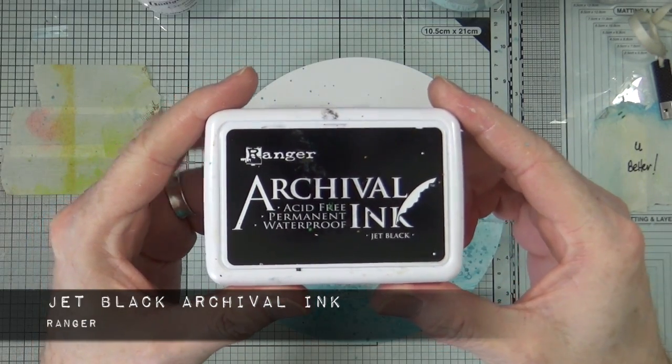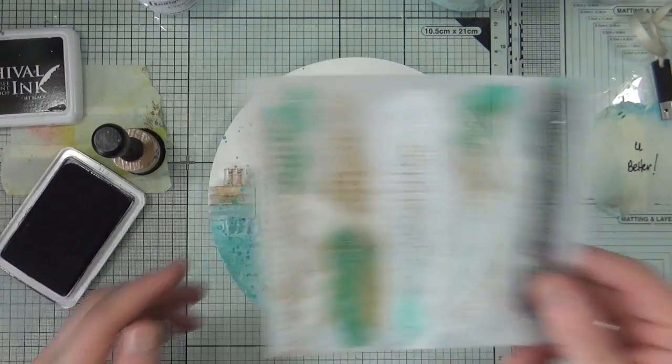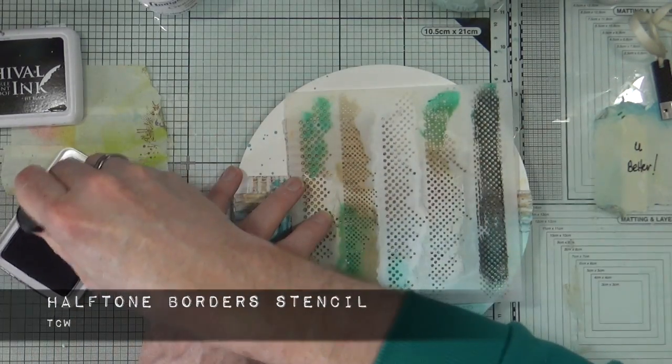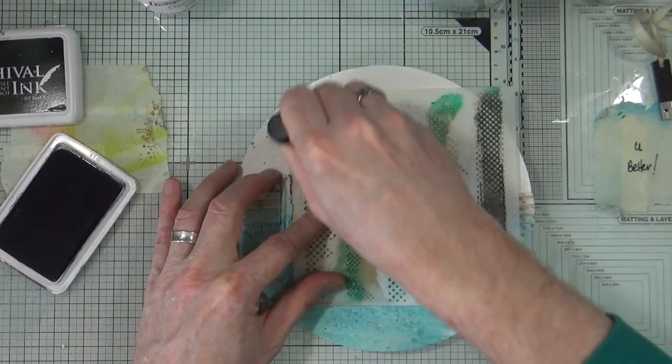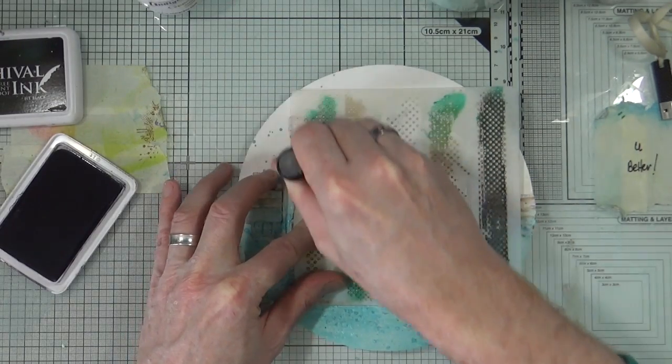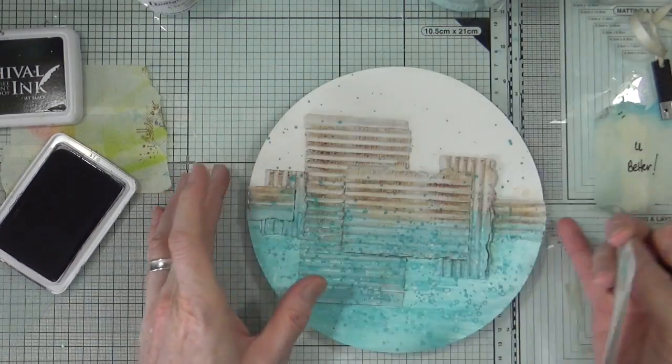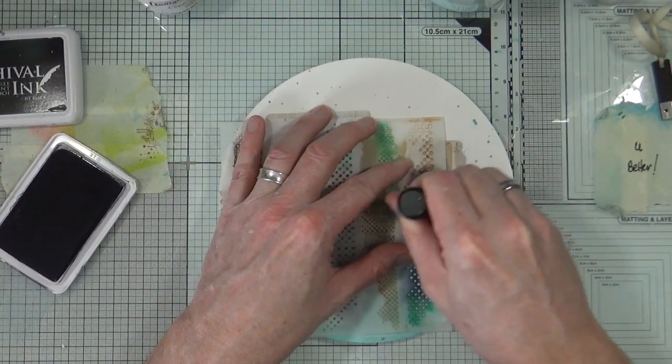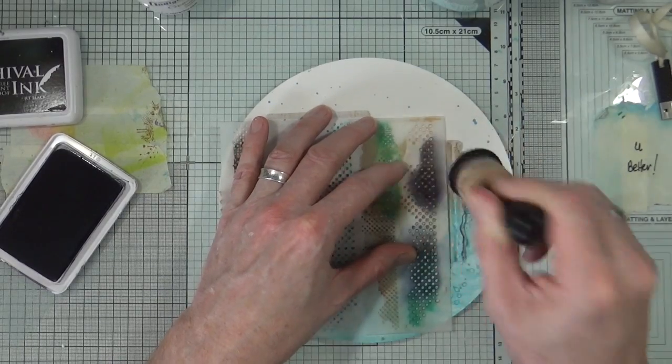Next I'm bringing out my Jet Black Archival ink. I have a blending foam and I also have the Halftone Borders stencil from TCW. I believe this is a Dina Wakley design and I thought that I would use the black ink to create some detail in the top half of the corrugated cardboard.